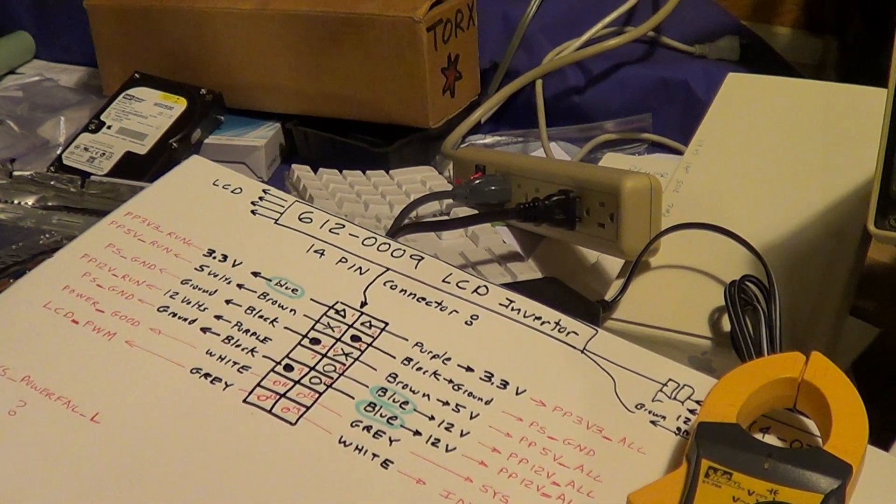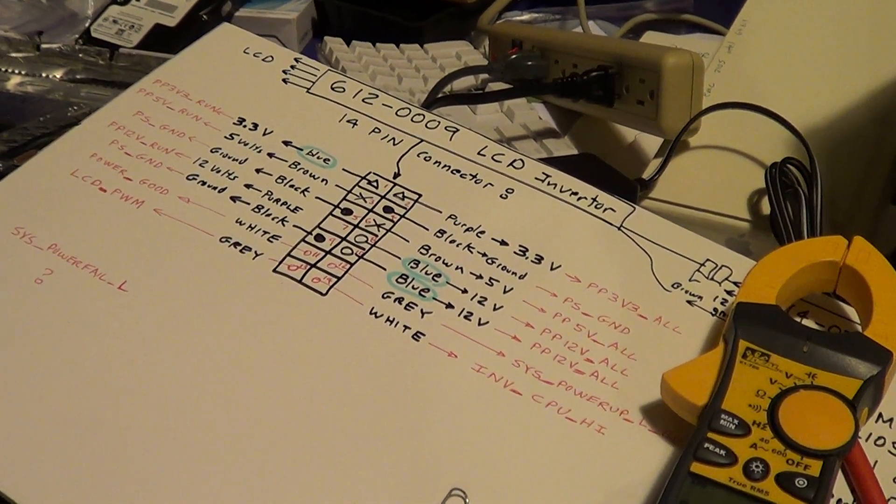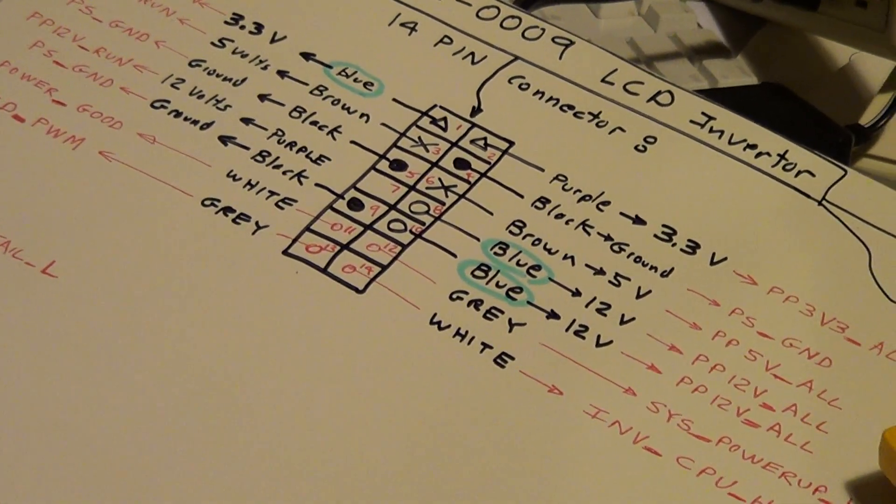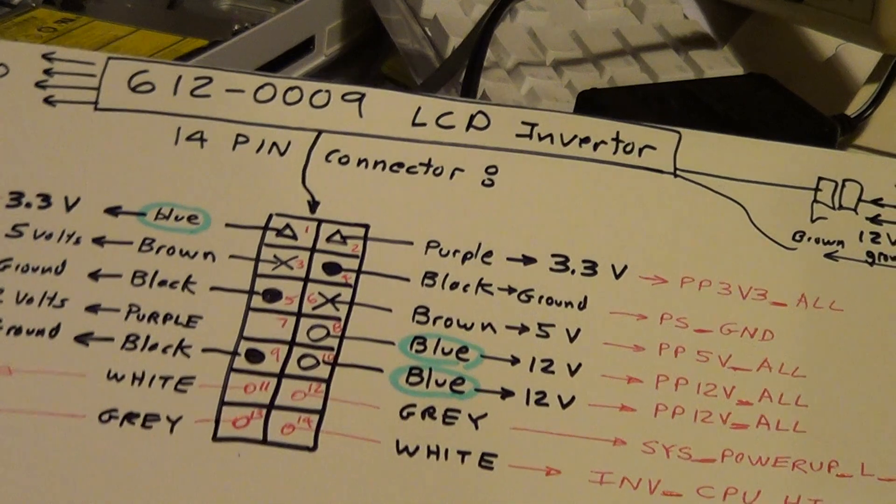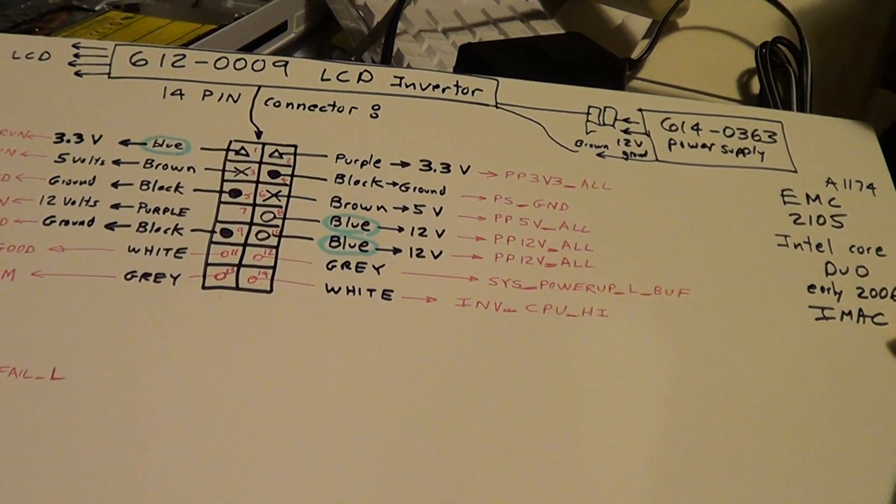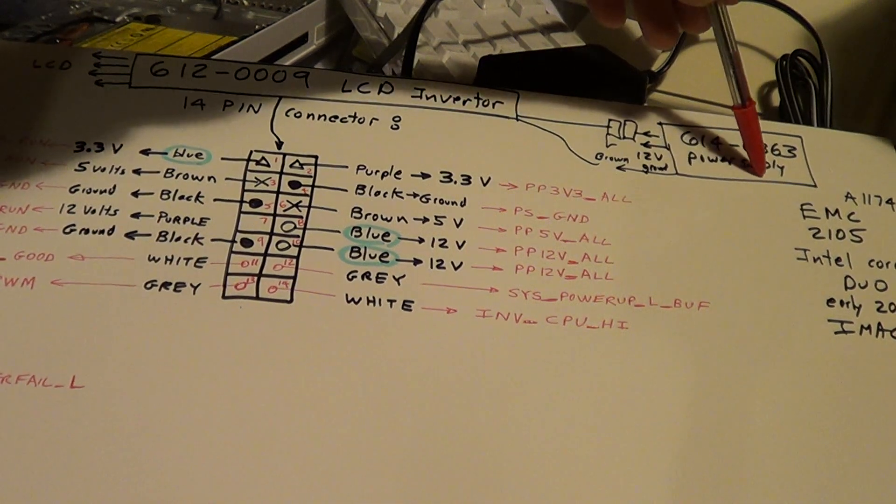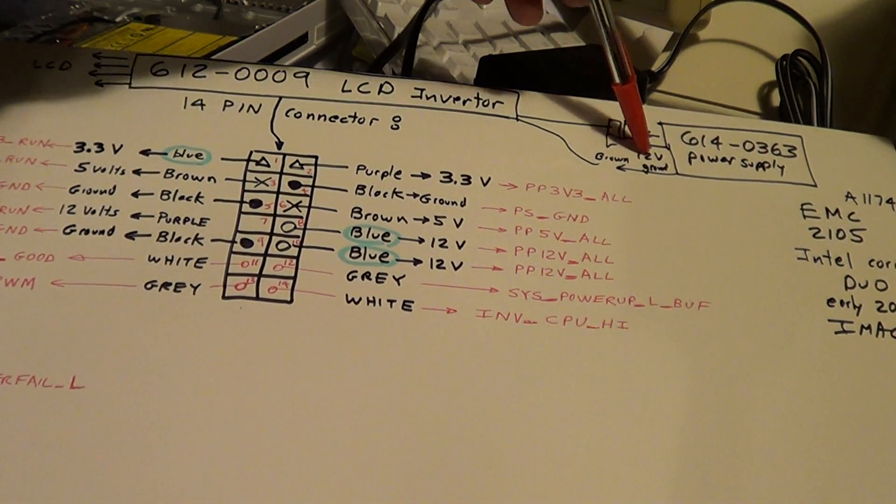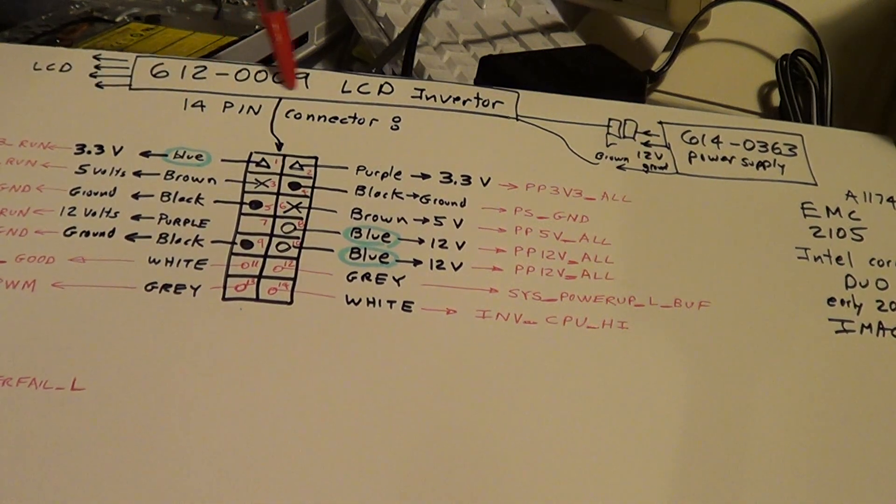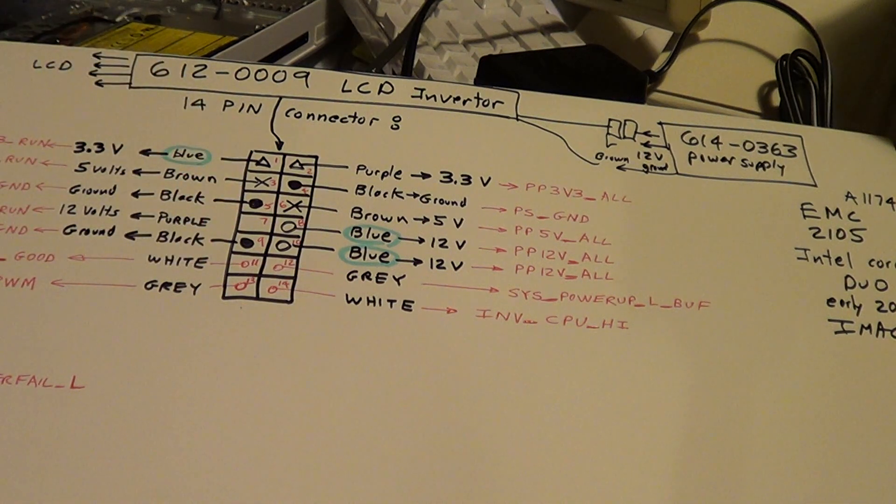Let me get a better picture of that. So you got the power supply over here - 110 volts or 220 puts out 12 volts and ground. This is the LCD inverter at the top and these are the output voltages.